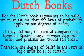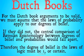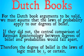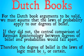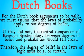If they did not, the central comparison of Bayesian epistemology between degrees of belief and probabilities would fall apart. We wouldn't be able to use Bayes' theorem to deal with degrees of belief, because Bayes' theorem is originally meant to deal with probabilities, which are different things than degrees of belief. So unless we can show that degrees of belief perfectly map onto probabilities, Bayesian epistemology is not going to work. Therefore, our degree of belief in the laws of logic has to be 1 — in other words, we have to be certain of the laws of logic, otherwise the Dutch book arguments are not going to be valid.